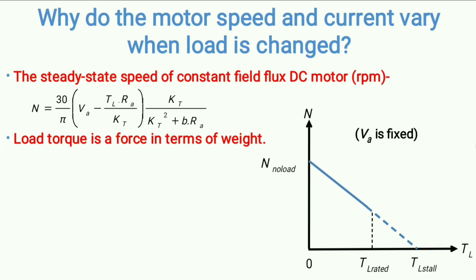For example, imagine you are driving a car with one friend inside. If another friend gets into the car, the load increases because the overall system weight is increased. Similarly, if one friend gets out, the load decreases. So load is essentially a weight — the torque generated by the motor must overcome this load torque, which is nothing but that force or weight.